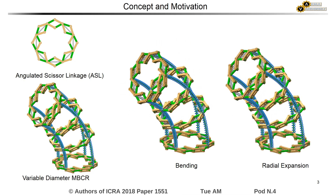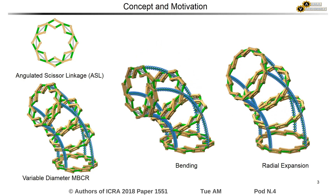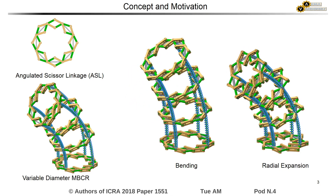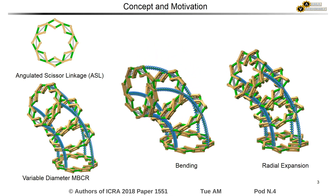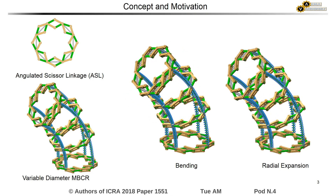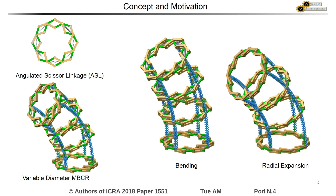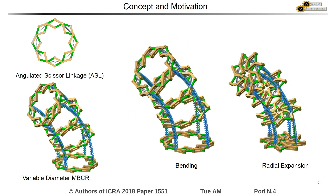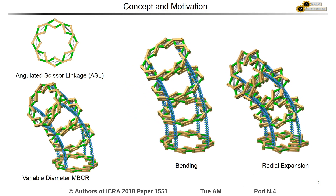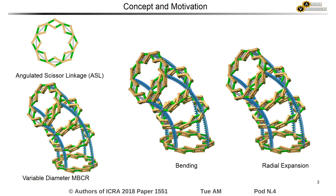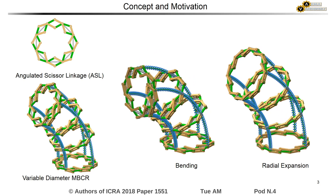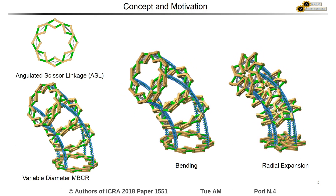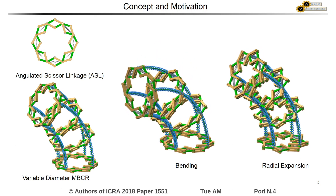The first animation shows a continuum robot bending in a given plane by pushing and pulling its secondary backbones. The second animation shows the continuum robot varying its radius by simultaneously actuating the angulated scissor linkages and its secondary backbones.